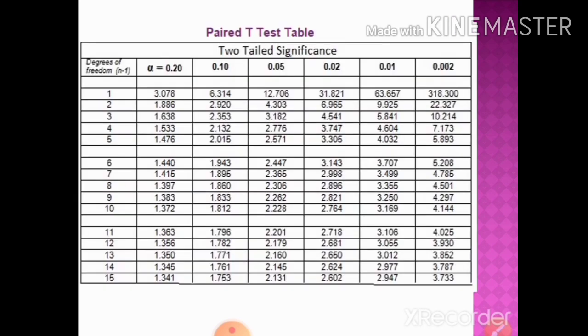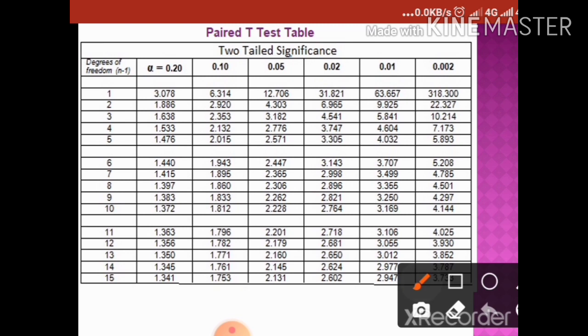For the paired t-test, the degree of freedom is n minus 1, so here the degree of freedom is 9. Against 9 degrees of freedom and a 0.05 level of significance, the critical value — which is already given in the question — is 2.26.